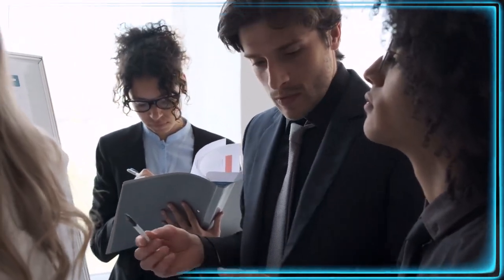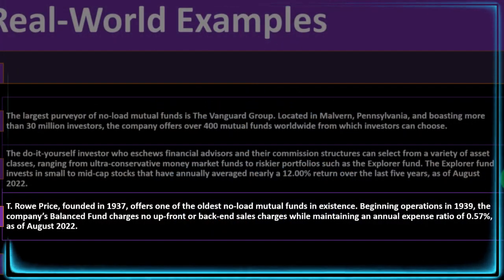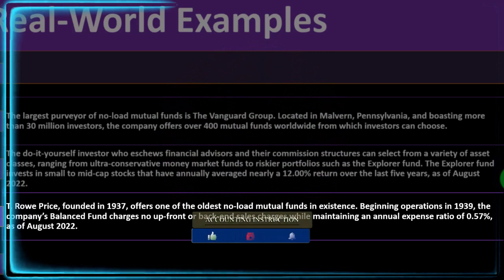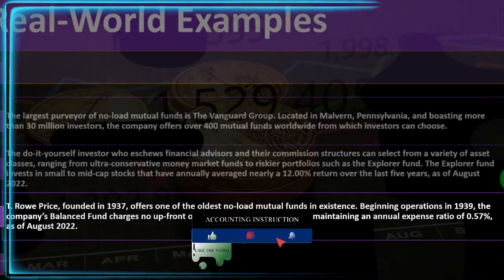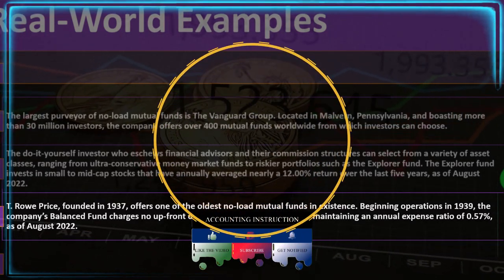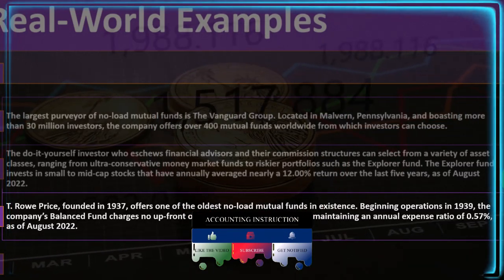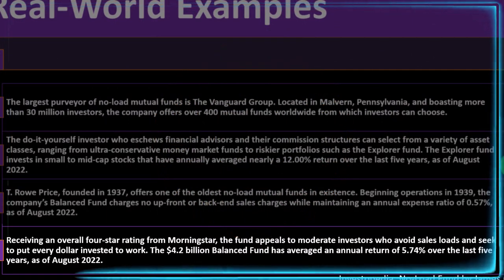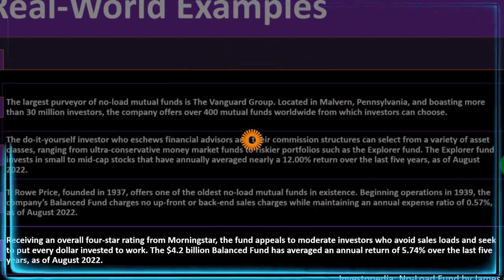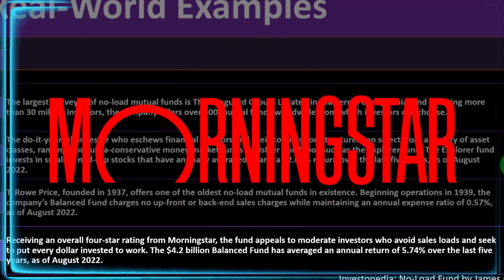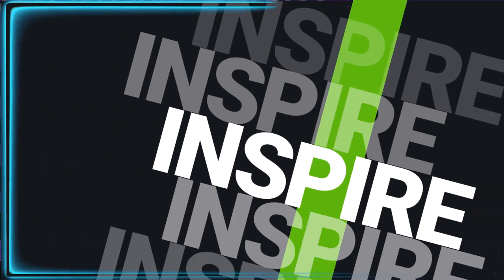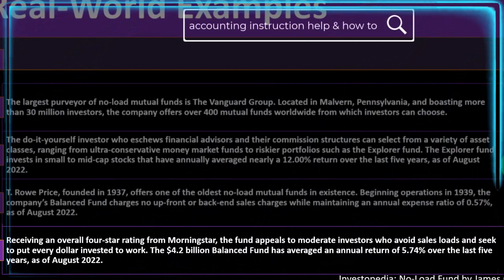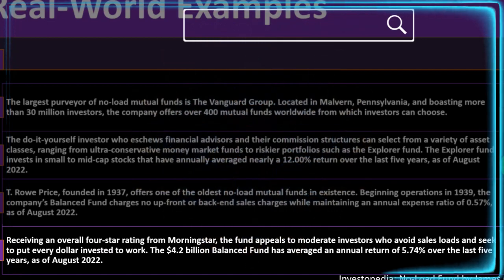T. Rowe Price, founded in 1937, offers one of the oldest no-load mutual funds in existence, beginning operations in 1939. The company's balanced fund charges no upfront or back-end sales charges while maintaining an annual expense ratio of 0.57% as of August 2022. Receiving an overall four-star rating from Morningstar, the fund appeals to moderate investors who avoid sales loads. The $4.2 billion balanced fund has averaged an annual return of 5.74% over the last five years as of August 2022.